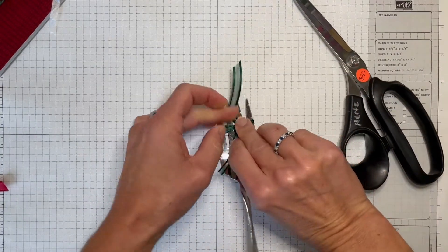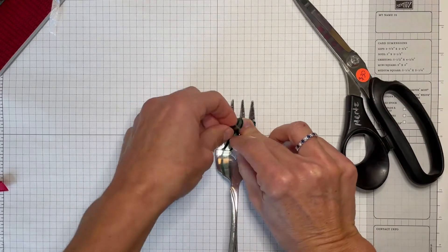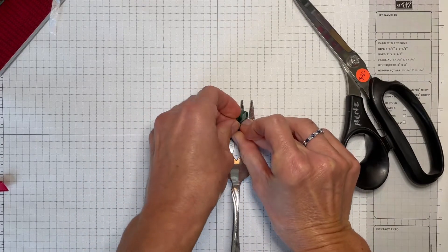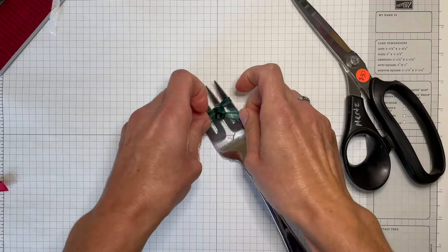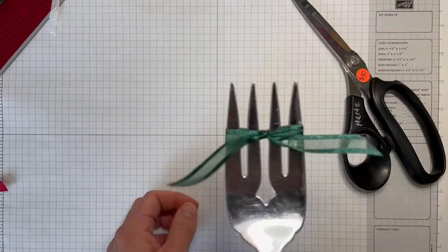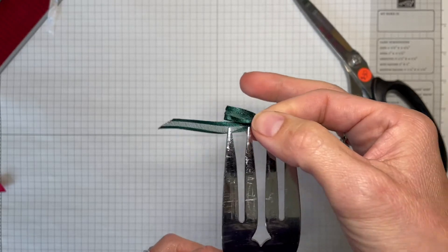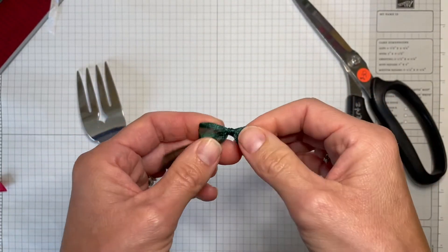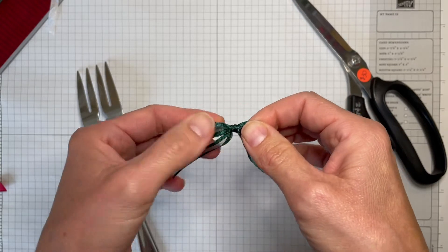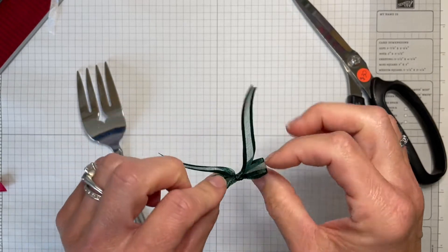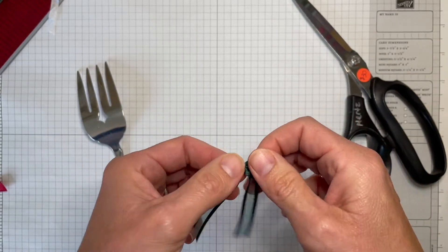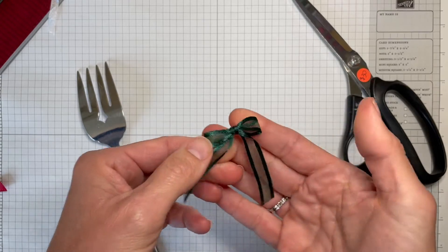Then all you do is tie a knot. Take the two tails and tie it. Then slide it right off your fork and you've got the cutest little bow. Now trim off the ends. I use a glue dot on the back to adhere it to the card front. There you go, there's your fork bow.